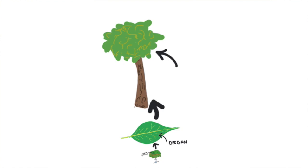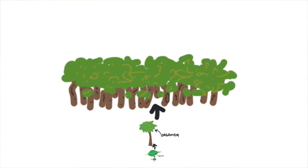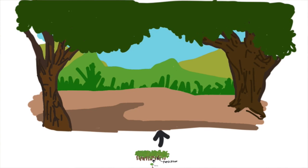And so this tree is an organism. The leaves, the trunk, the roots, they all work together to make the tree. Many of the same type of organism can come together and form a population. So like this forest is all made up of the same type of tree, or we can have a population of chipmunks that live in the forest.